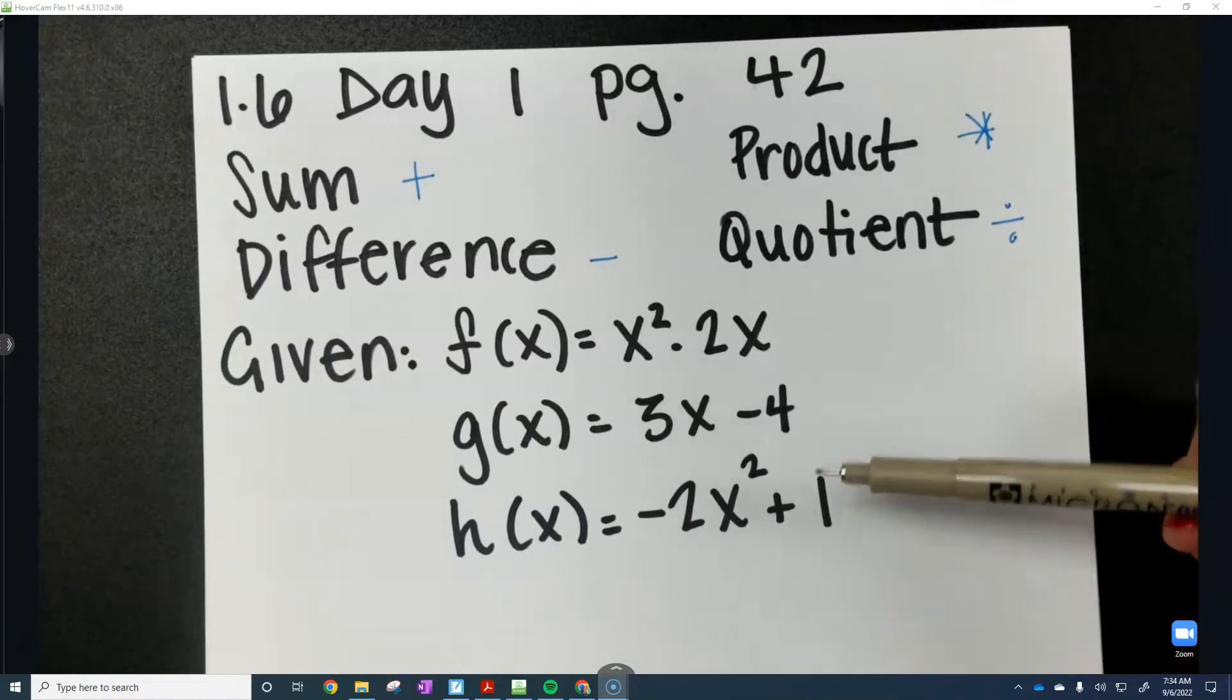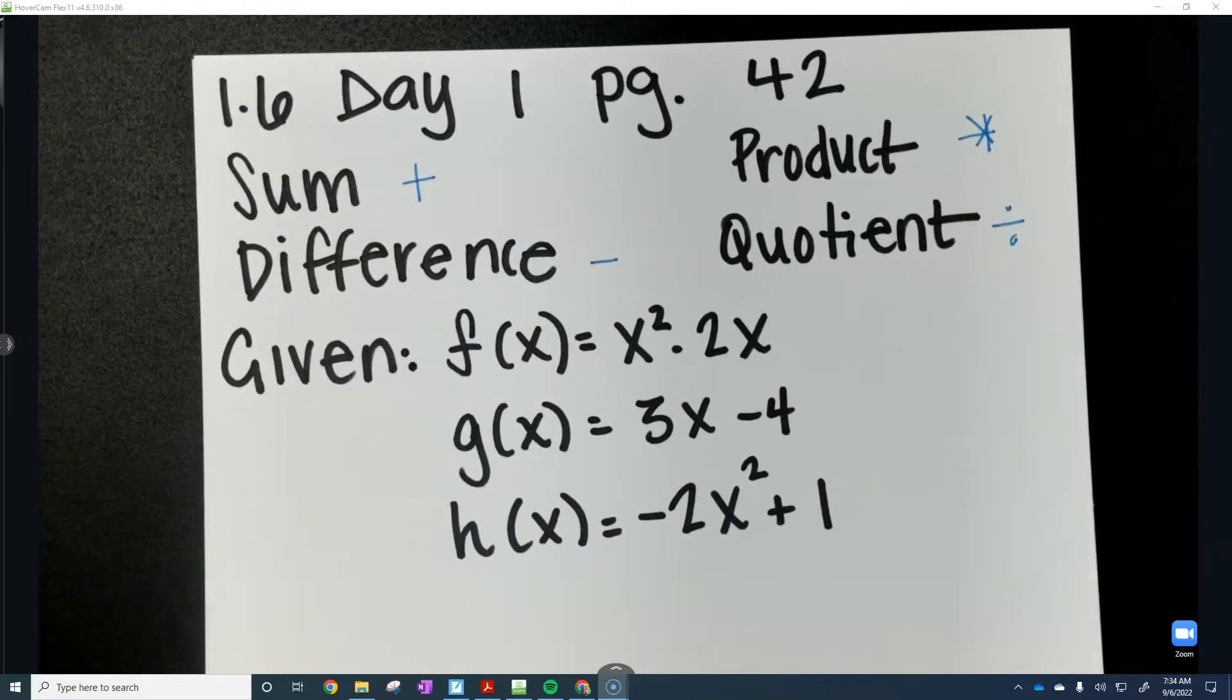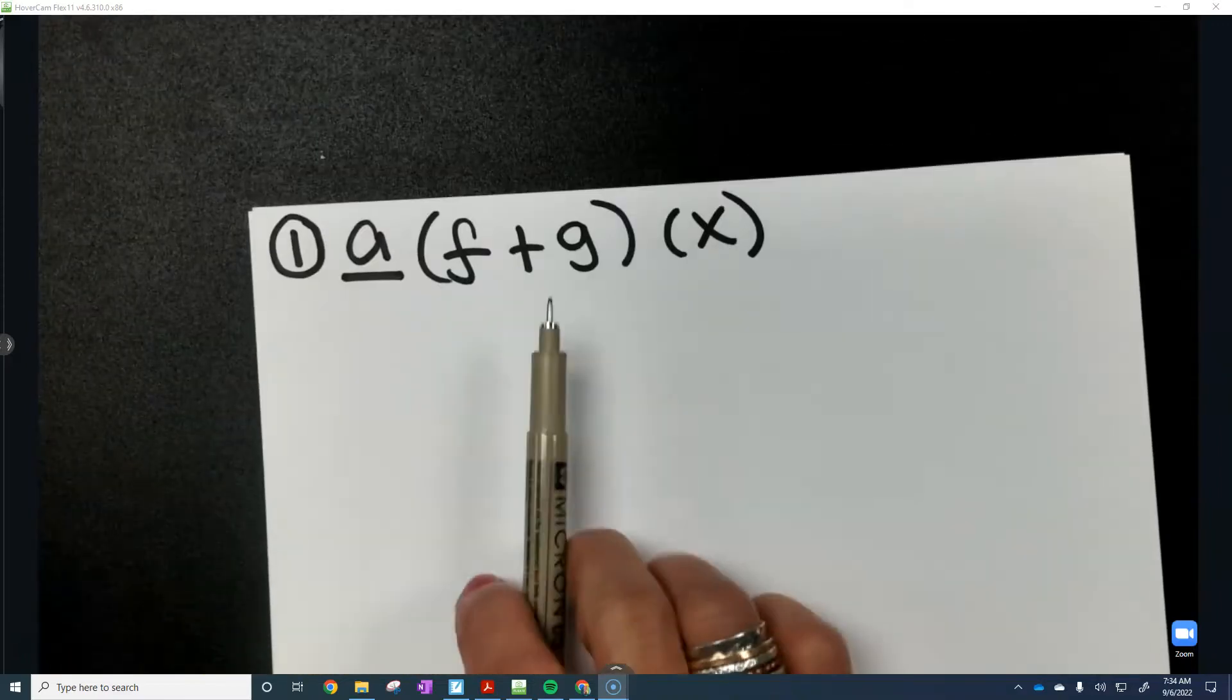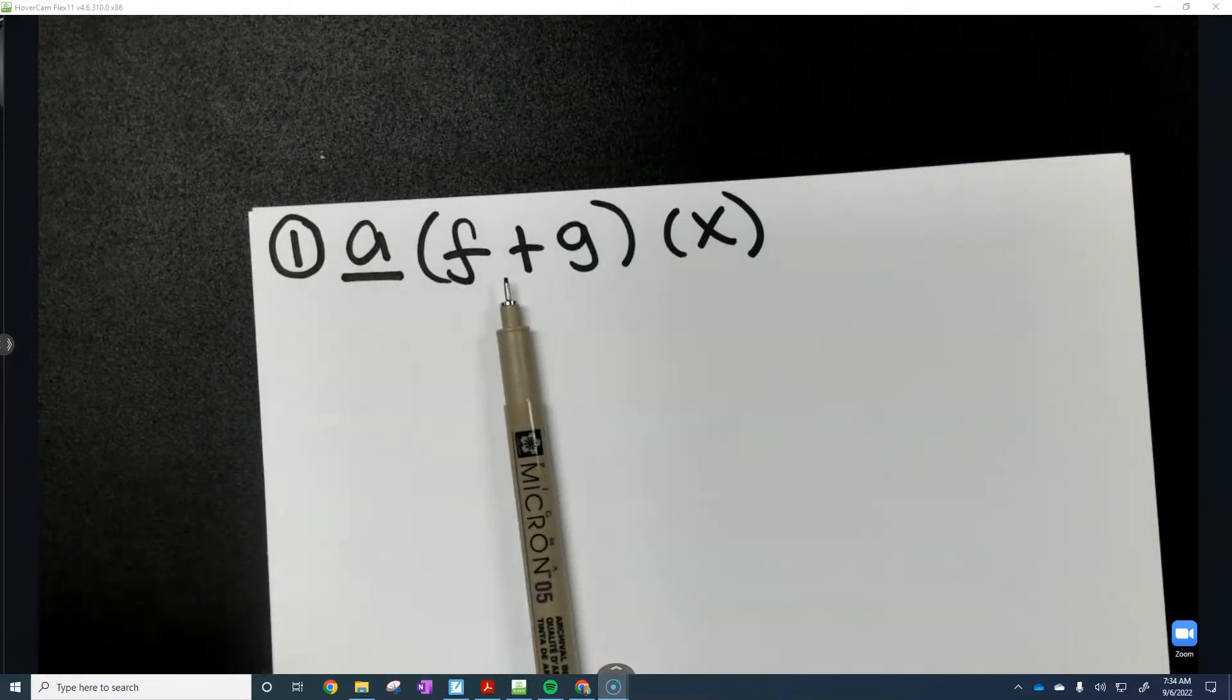So we have f of x is x squared minus 2x, g of x equals 3x minus 4, and h of x is negative 2x squared plus 1. And what we're going to do with all three of those is we're going to add first. So when you see this, of course that means add, we're going to add the two functions together and just combine like terms.